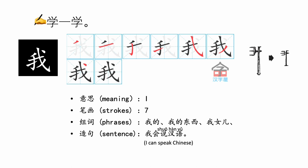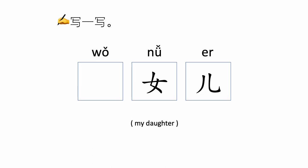Now let's learn the character 我. It has seven strokes: 撇, 横, 竖钩, 提, 斜钩, 撇, 点. The structure of the character 我 is a bit like a weapon called the trident. 我 means I or me. It can form the phrases 我的 — mine, 我的东西 — my things, 我女儿 — my daughter. And the sentence 我会说汉语, I can speak Chinese. Can you write the 我?